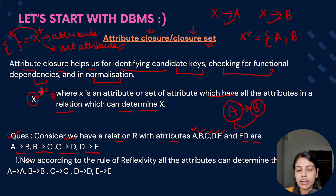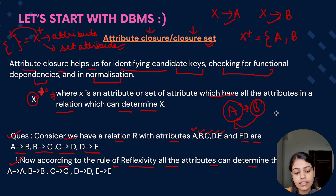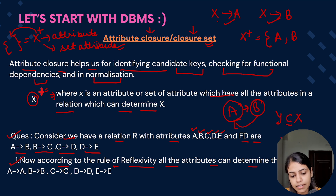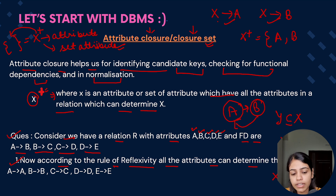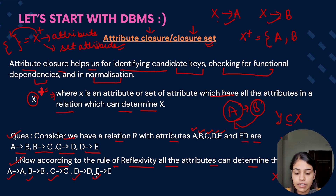Now, the very first step: according to the rule of reflexivity, all attributes can determine themselves. The rule of reflexivity states that if y is a subset of x, then x can determine y. Since y is a subset of x, x can determine x. So we derive: A determines A, B determines B, C determines C, D determines D, and E determines E.